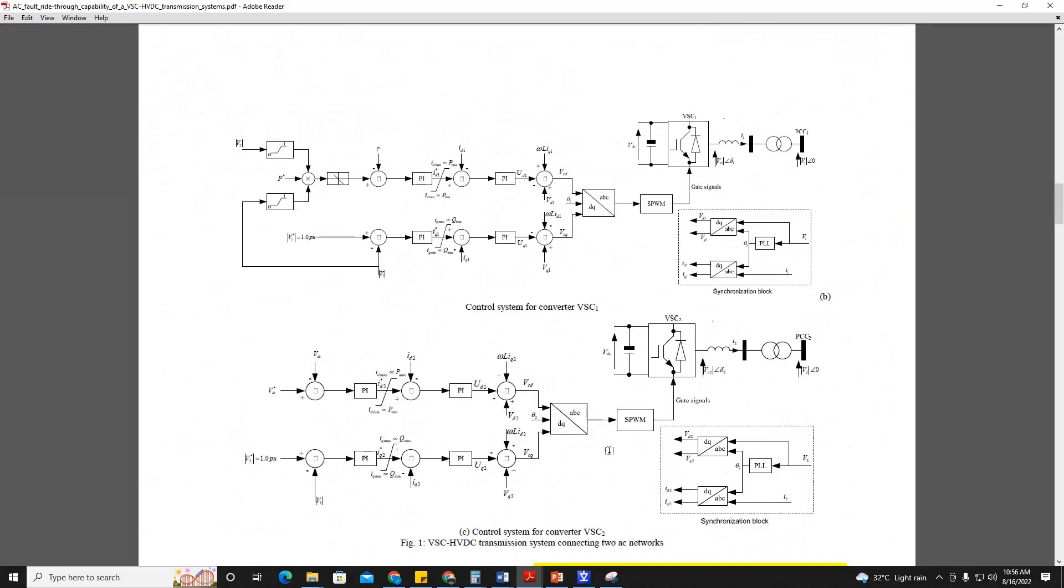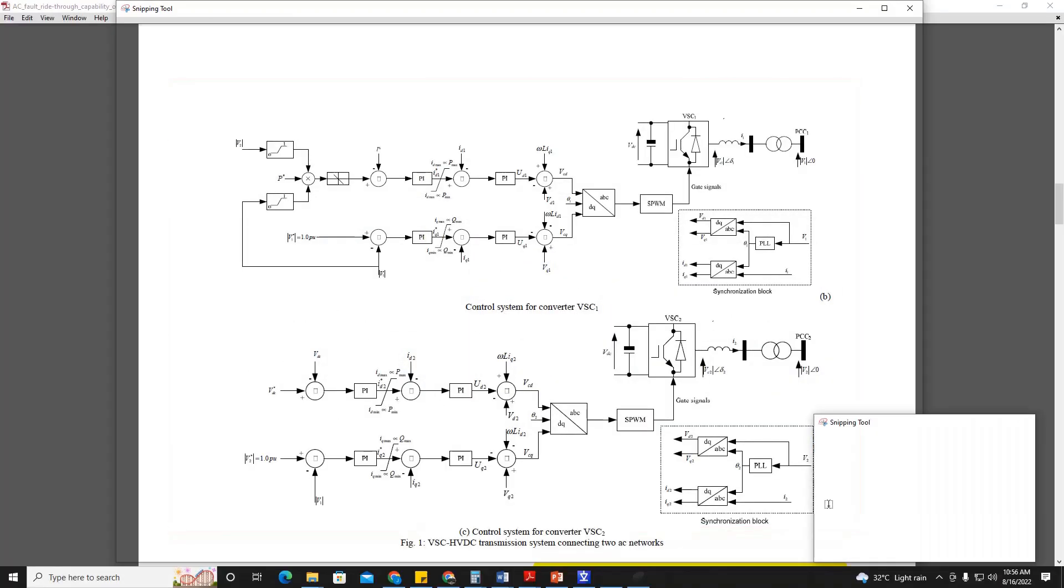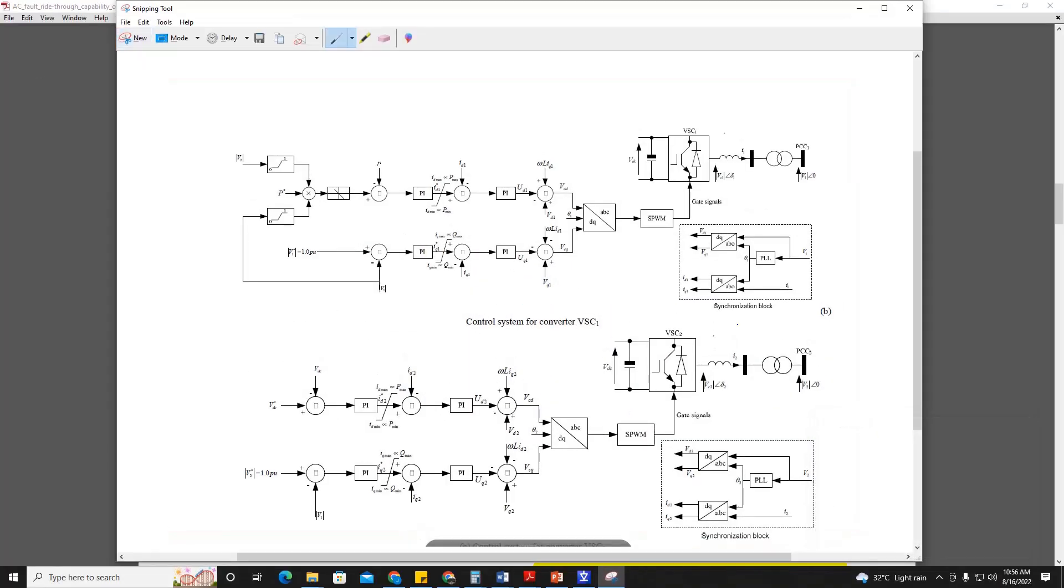So this is the control diagram. Let us quickly have a review of this. At converter station 1, this reference value active power is adjusted depending upon this voltage V2 and this voltage V1. Here is the V1 voltage and here is the V2 voltage.